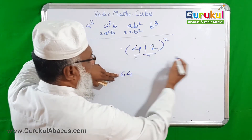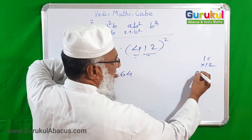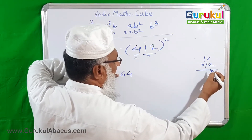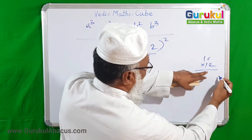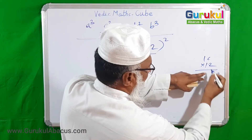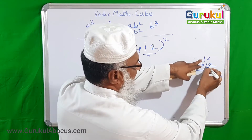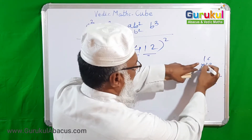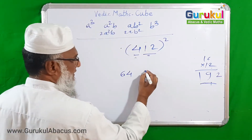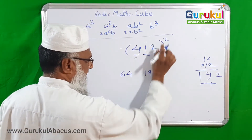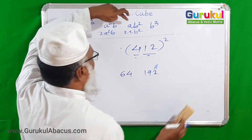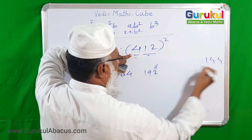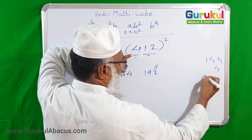Now A squared times B: A squared is 16, multiplied by 12. Computing 16 times 12: 12 times 6 is 72, write 2 carry 7; 12 times 1 is 12, plus 7 is 19. So 16 times 12 is 192. We have 192 here.